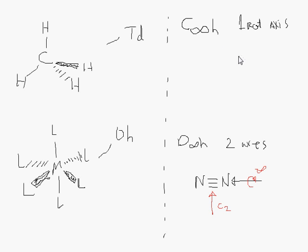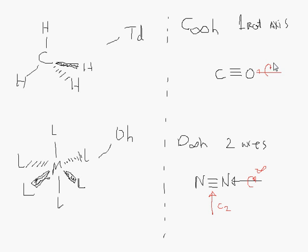For the C∞v ones, I think last time I used carbon dioxide, which is a linear molecule — but actually carbon dioxide would be D∞h as well. Let's use carbon monoxide instead. There's your infinity axis, and you don't have a perpendicular rotation axis. So you only have one primary rotation axis, making it C∞v.